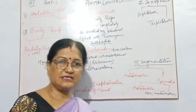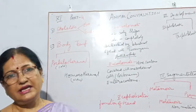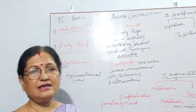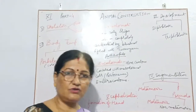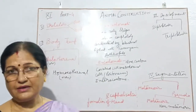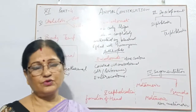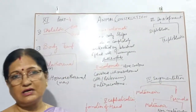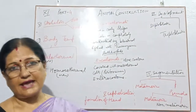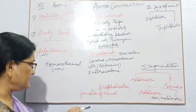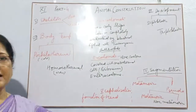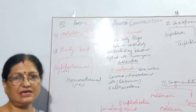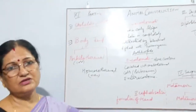Cephalization takes place while growing in all organisms. Only after cephalization can doctors understand how the organism will grow — whether this embryo will grow into a human being, a horse, a donkey, or a cat.